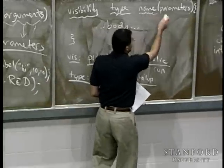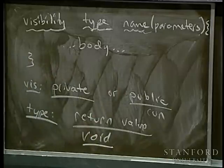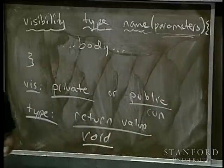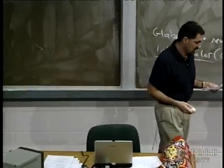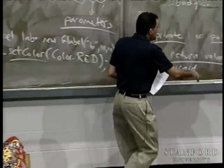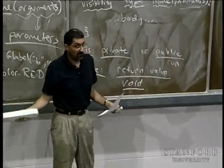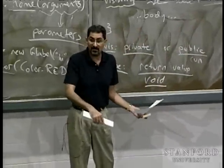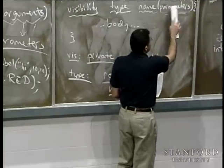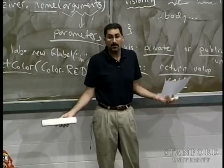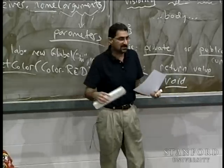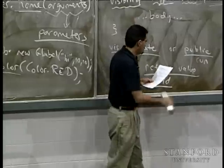Parameters are information passed into the method for it to operate on. Some methods have no parameters — like Karel methods — in which case the parameter list is empty: just open and close parentheses. When you call such a method, you write the name followed by empty parentheses.